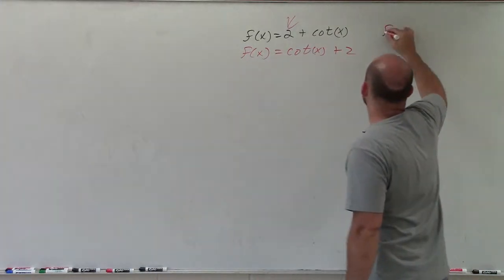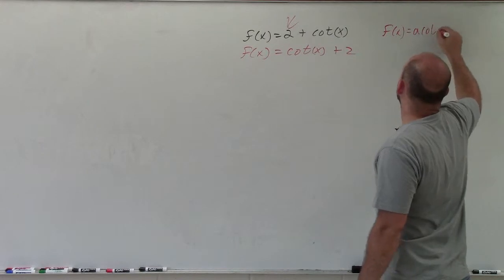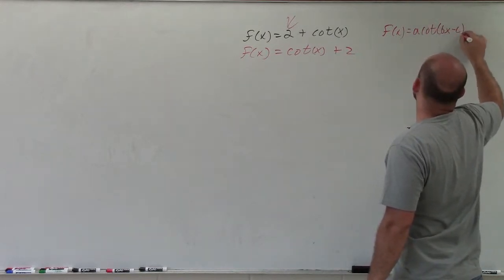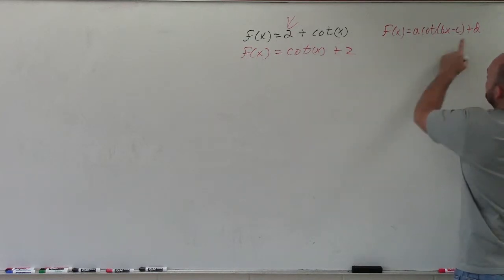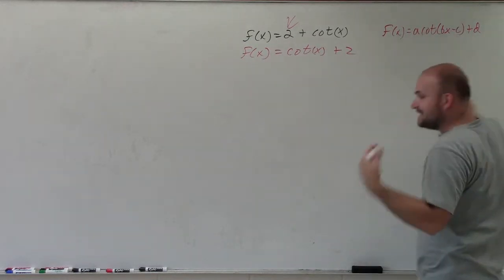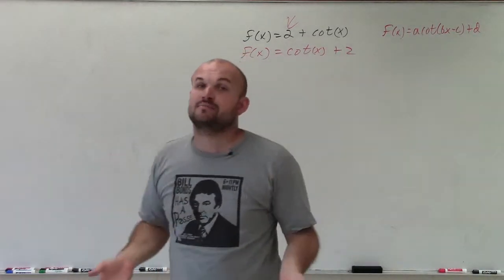But when I look at my transformation function, a·cot(bx - c) + d, you can see that the only thing outside of my function is this d, which is 2. And d represents my vertical translation.